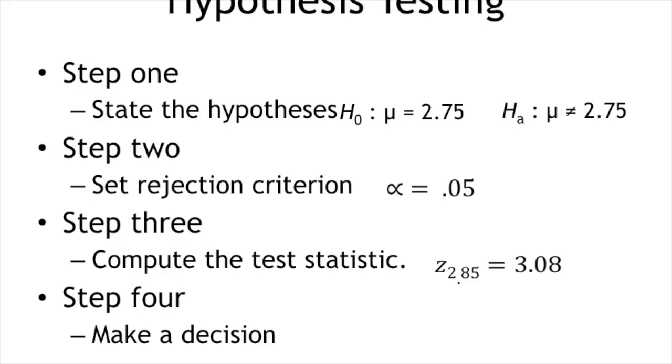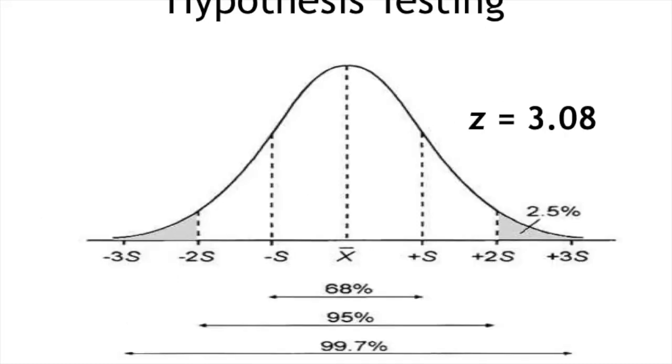So last of all, I need to make a decision about that null hypothesis. If my sample mean of 2.85 is more than 3.08 standard deviations above the mean, it is way out in the tails of my sampling distribution for the mean.